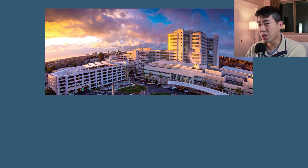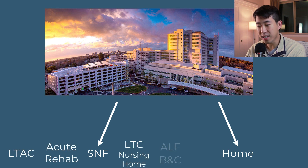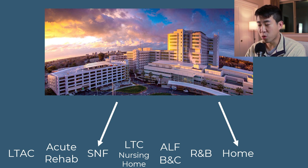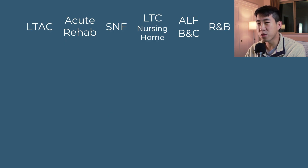When patients are admitted to the hospital, the two most common places that we discharge patients are either to a SNF or to home. But besides SNF and home, there's actually a whole variety of places that a patient could potentially go to, whether that's an LTAC, acute rehab, long-term care (otherwise known as a nursing home), assisted living facility or board and cares, and room and boards. The whole point of discharge planning is to find the right location for our patient, make sure it's the safest place for them, and prevent them from being readmitted. Let's go through all of these locations one by one, starting with the highest acuity placement first: the LTAC.